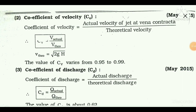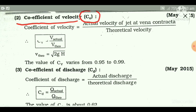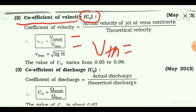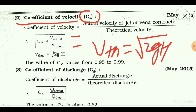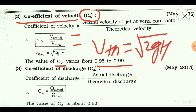The another hydraulic coefficient is the coefficient of velocity, denoted by Cv. The coefficient of velocity is defined as the ratio of actual velocity to the theoretical velocity. The theoretical velocity can be calculated as √(2gh), where h is the head of the water from the center of the orifice. The value of Cv, the coefficient of velocity, varies from 0.95 to 0.99.